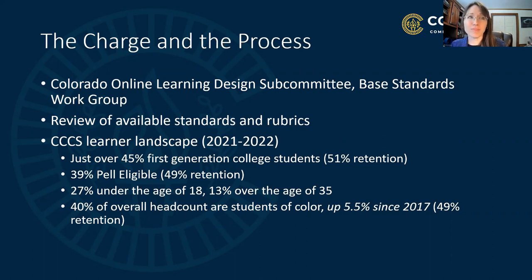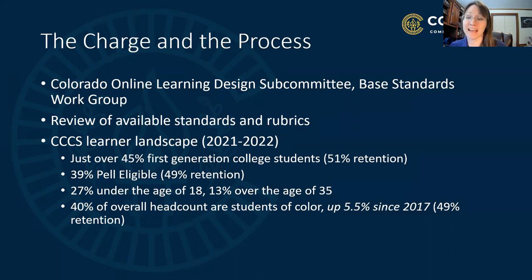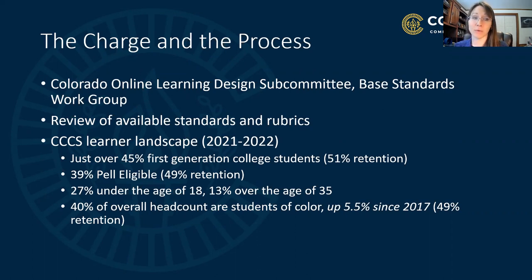In efforts to reach out to different colleges to get a sense of their individual rates, we identified a gap between the data of students who register with or seek accommodations from disability access services and what the national averages are. For instance, one college cited that 6% of their students work with their disability access services department, while the national average is more like 19%. That really emphasizes why accessibility is a vital element in the standards.